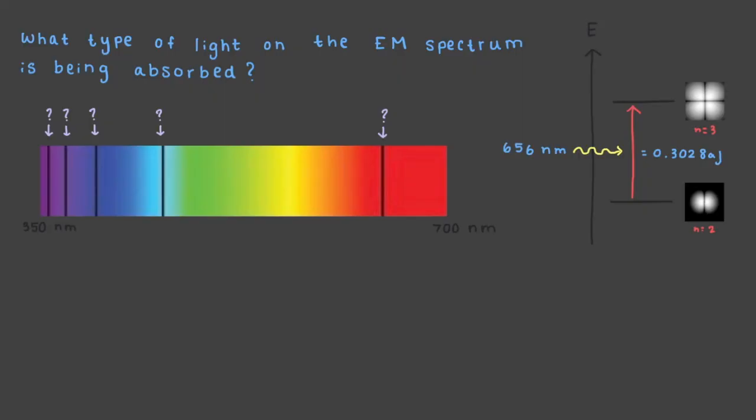What type of light on the electromagnetic spectrum is being absorbed? That's right, this black line represents the red light being absorbed during the n equals 2 to n equals 3 transformation.